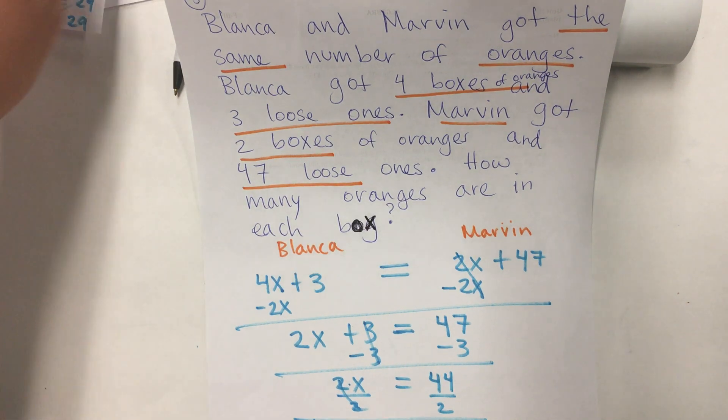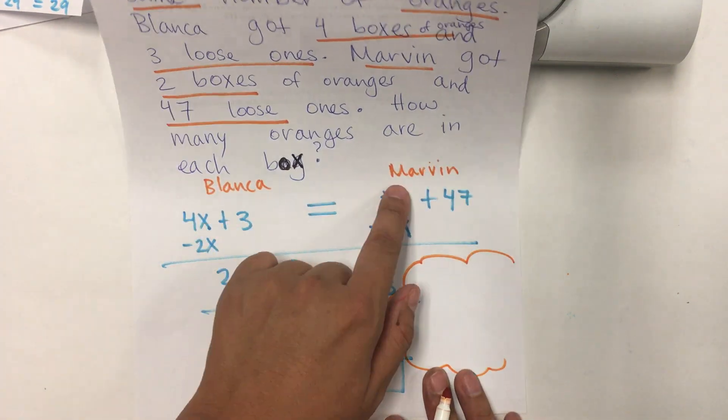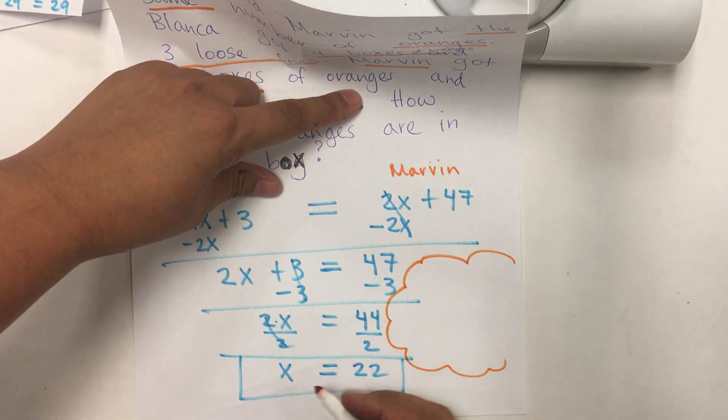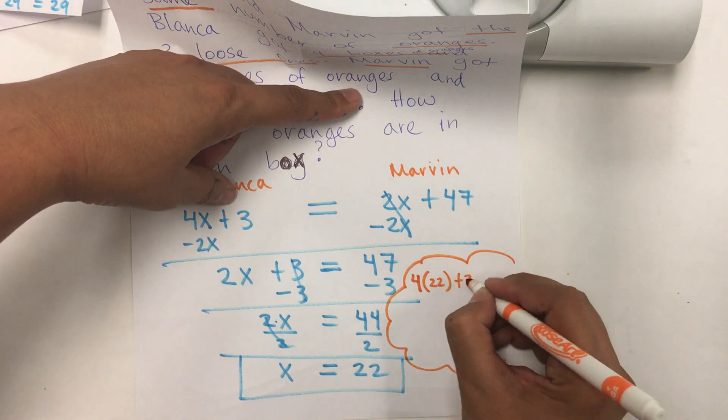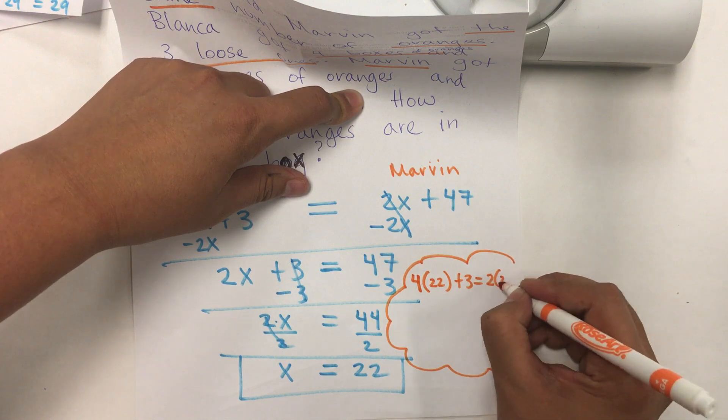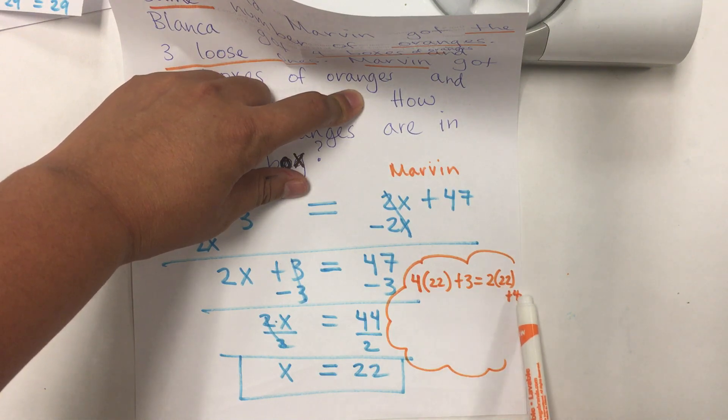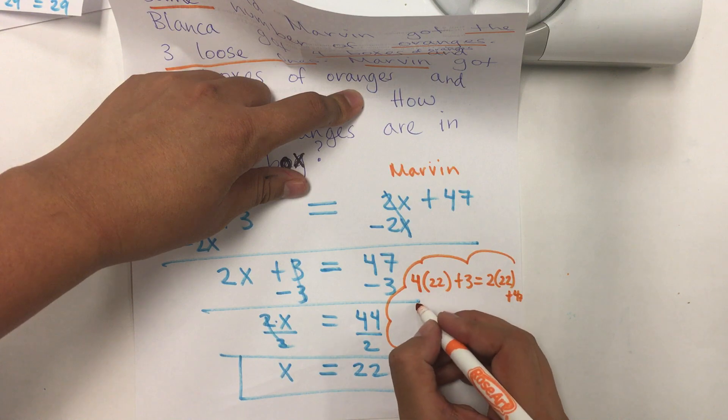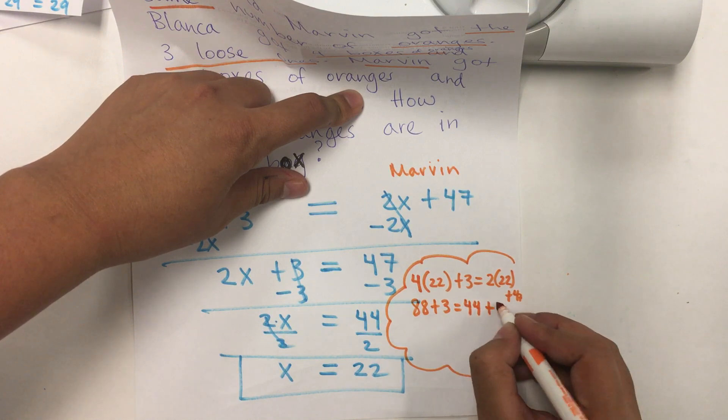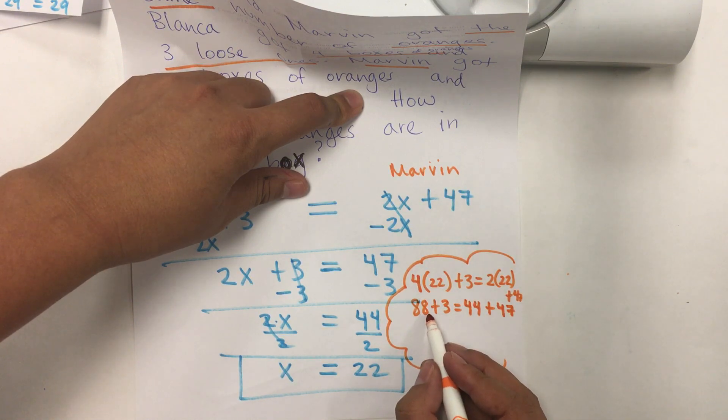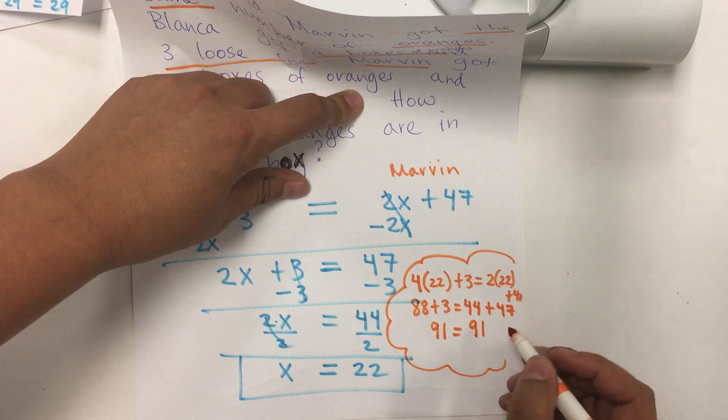So, for the check, I'm going to get this equation and I'm going to replace it with 22 for x. So, 4 times the x is 22 plus 3 should be equal to 2 times 22 plus 47. I multiply 4 times 22 is 88 plus 3 equals 2 times 22 is 44 plus 47. 88 plus 3 is 91. And, also, 44 plus 47 is 91.